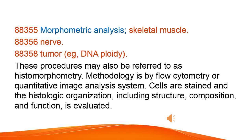Morphometric analysis: skeletal muscle, nerve, tumor — e.g., DNA ploidy. These procedures may also be referred to as histomorphometry. Methodology is by flow cytometry or quantitative image analysis system. Cells are stained and the histologic organization, including structure, composition, and function, is evaluated.